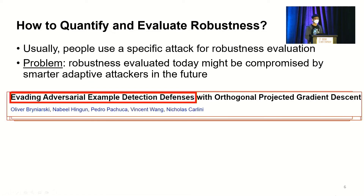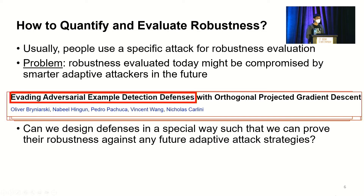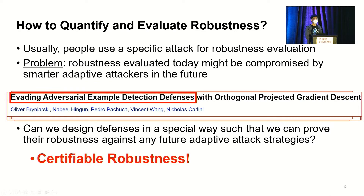So here we ask: can we design defenses in a special way such that we can prove their robustness against any future adaptive strategy? That is the focus of today's talk — Certifiable Robustness.